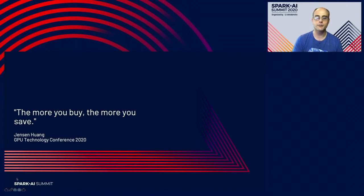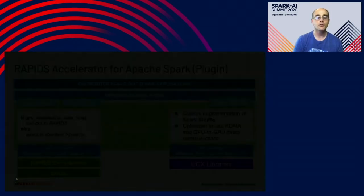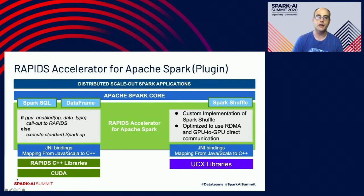We're able to speed up several times over the current state of the art and can also drastically drop the cost. As Jensen, our CEO, loves to say: 'The more you buy, the more you save.' With this, we're really starting to show what Project Hydrogen can do — we've created a system called the Rapids Accelerator for Apache Spark, where we can do all of the processing on the GPU end to end: machine learning and ETL together.